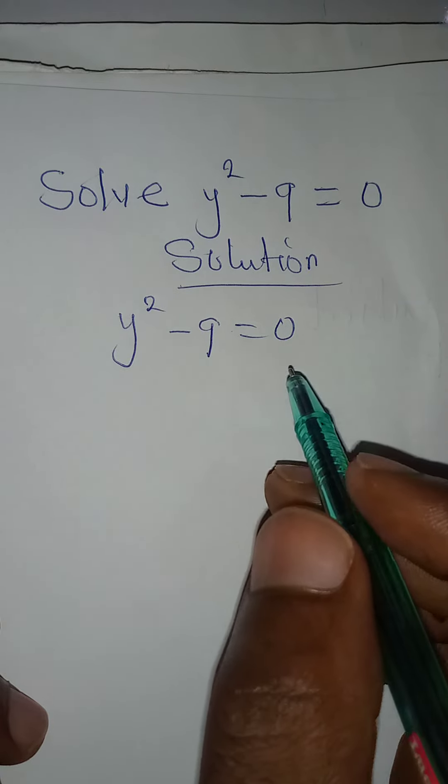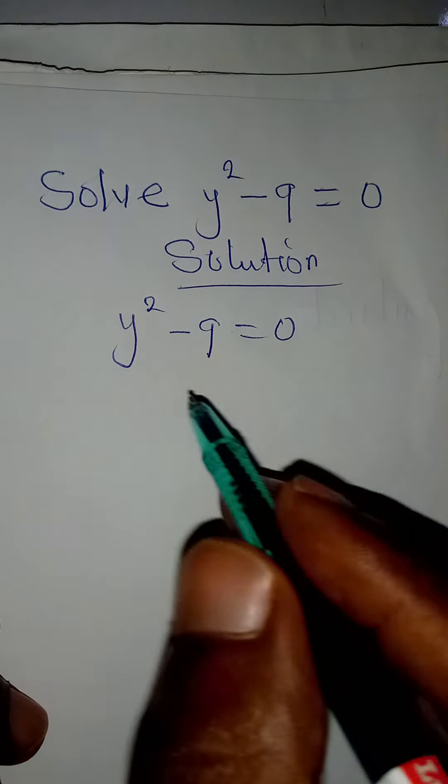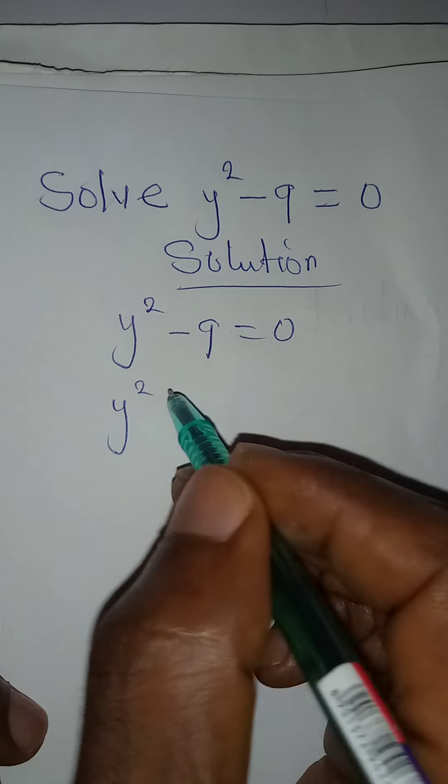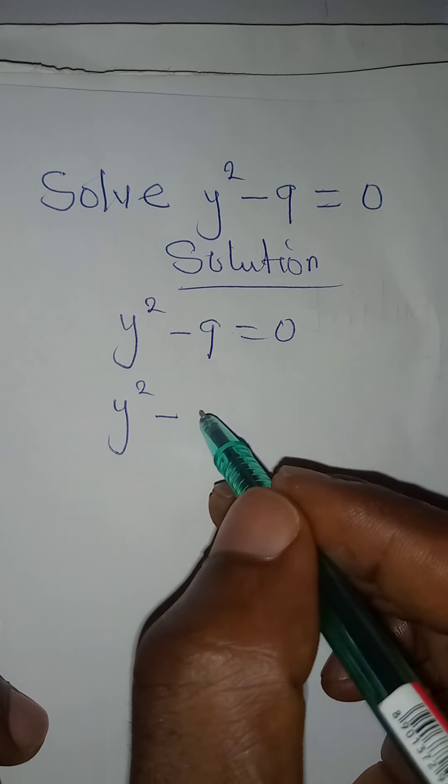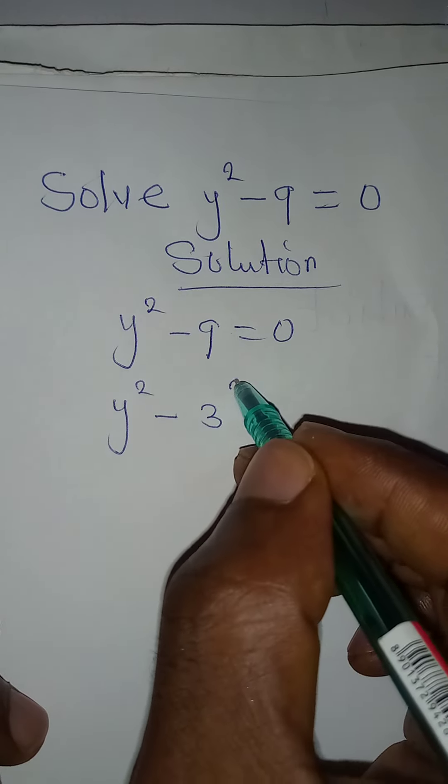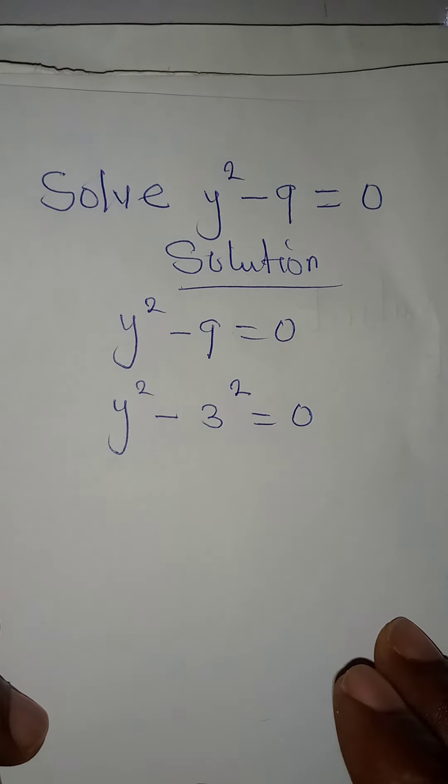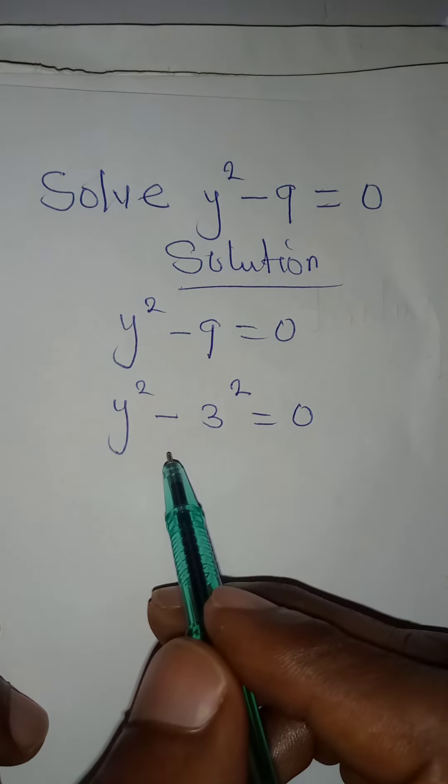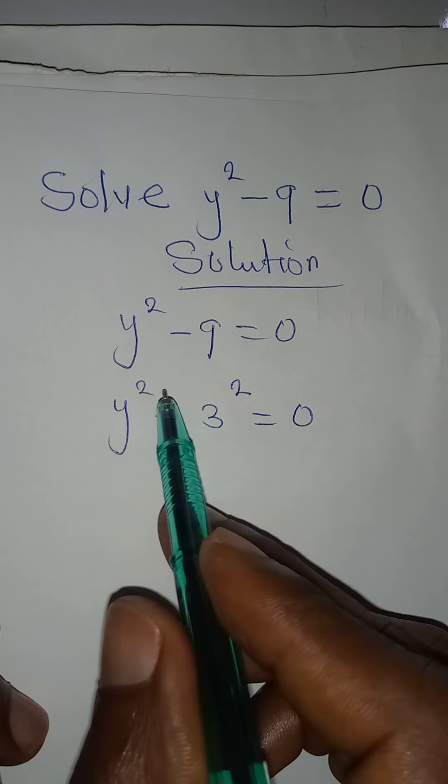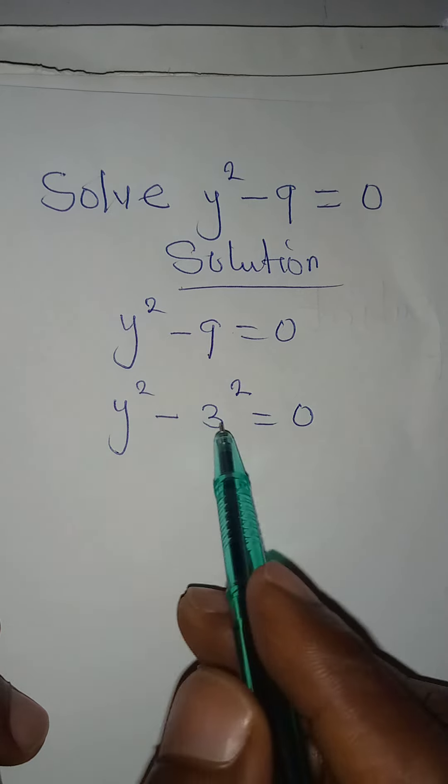I want to solve this using difference of two squares. y squared minus 9 here is the same thing as 3 squared. And this is equal to 0. Now what I'm doing is to make sure that we have squares on both of them.